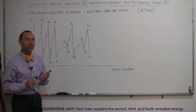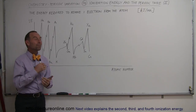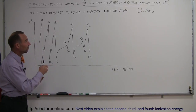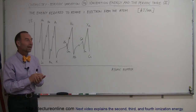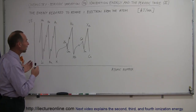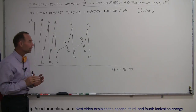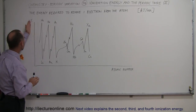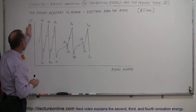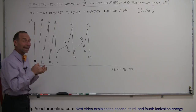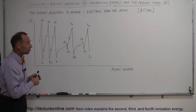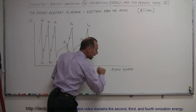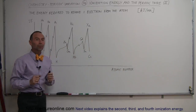Here we have another example of the dramatic relationship between the ionization energy and the periodic table. This chart gives us an indication of the ionization energy on the vertical axis — the energy required to remove a single electron — and on the horizontal axis we have the atomic number.